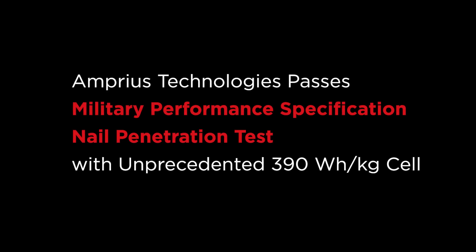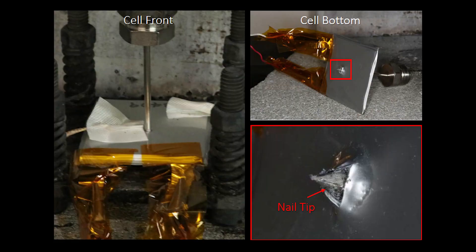This video was recorded by an independent third-party test lab performing the nail penetration test of 390 Wh per kilogram silicon nanowire cells following U.S. Army specifications.